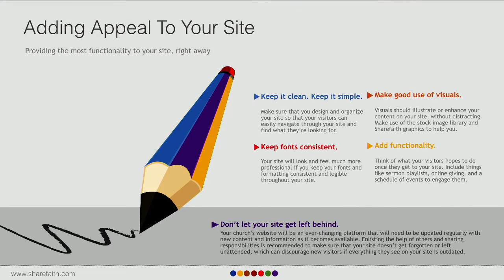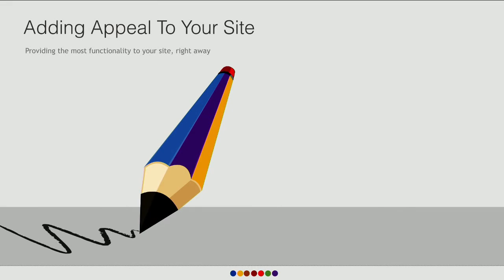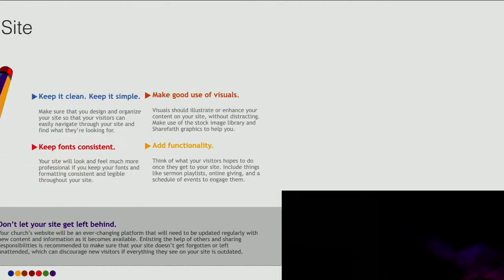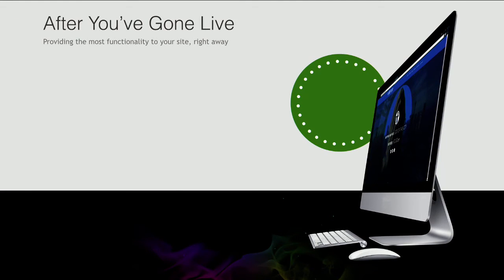Now lastly, let's talk about things you can do once your site is live. After you've gone live, there are some things to do sooner rather than later. The first thing is to promote it to your church. Don't just launch your site and not say anything about it. Tell people it's there. This can be done through your services — having the pastor or whoever's in charge of announcements let people know the site is up. Have people go see it for themselves and know it's there as an area they can go to for information.